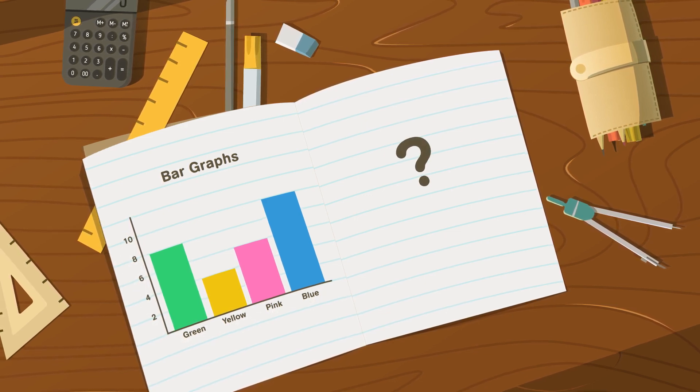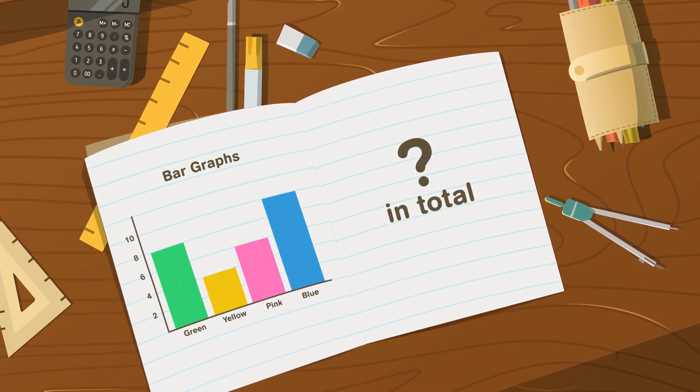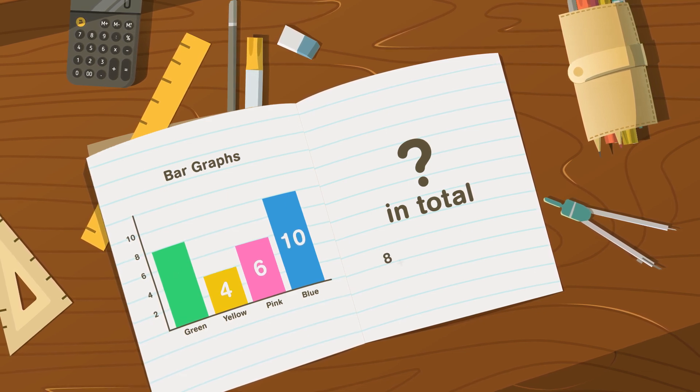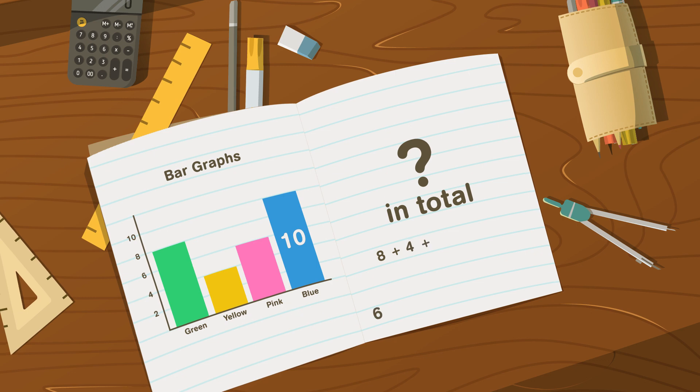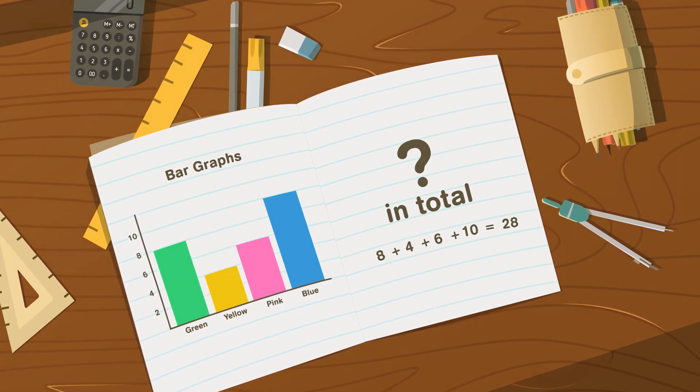How much sea glass did you find in total? You can add up the numbers from each bar on the graph. 8 plus 4 plus 6 plus 10 equals 28 pieces.